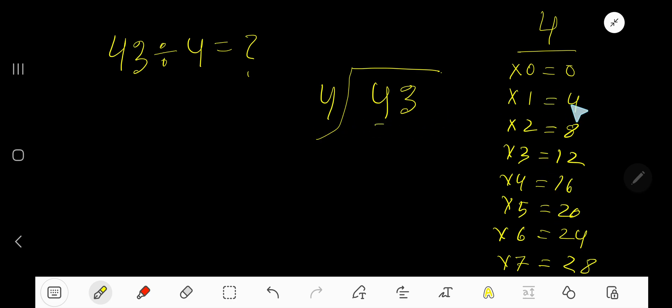4 goes into this 4 how many times? 4 goes into 4 one time. 1 times 4 is 4. Subtract, you get 0. Bring down this 3. 0, 3 means 3.